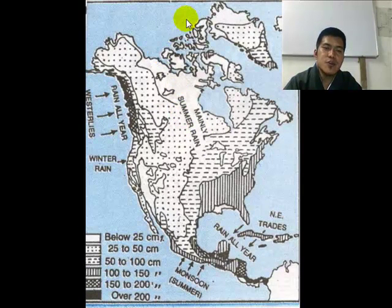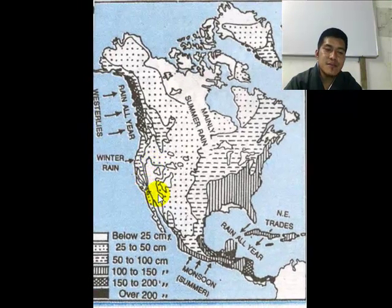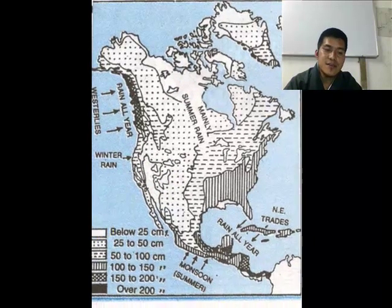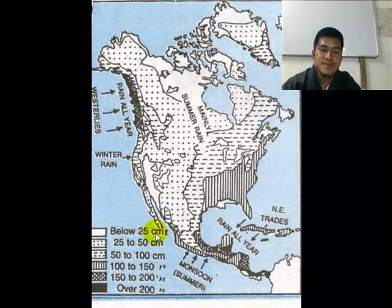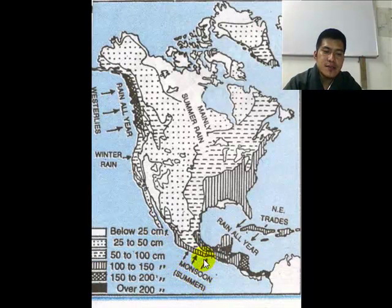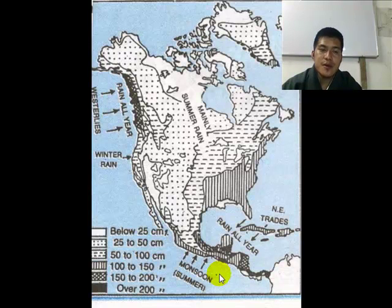On the extreme north of this continent, the Great Basin and the Colorado Plateau receive below 25 cm of rainfall, shown as plain white on the map. We can also see that this area receives the Monsoon Wind — meaning the Monsoon Wind is not only in Asia or in Bhutan, but even in America the Monsoon Wind affects this area.